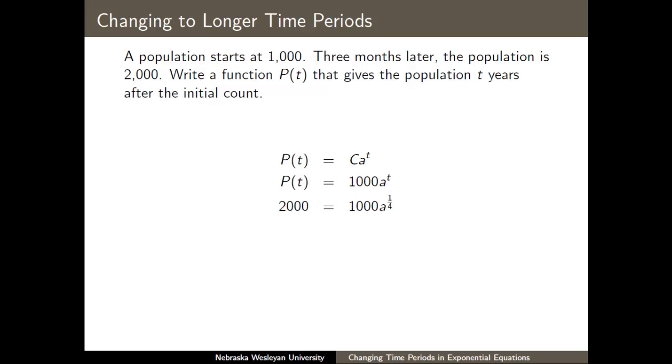Now I can try to isolate a as before. If I divide both sides by 1,000, raise both sides to the fourth power, which cancels the one-fourth power that's on a. Now I have a is equal to 2 to the fourth, which is the same as 16. So my model is now 1,000 times 16 to the power of t.